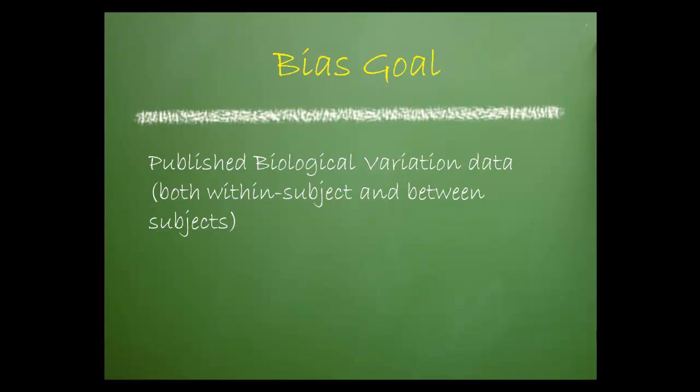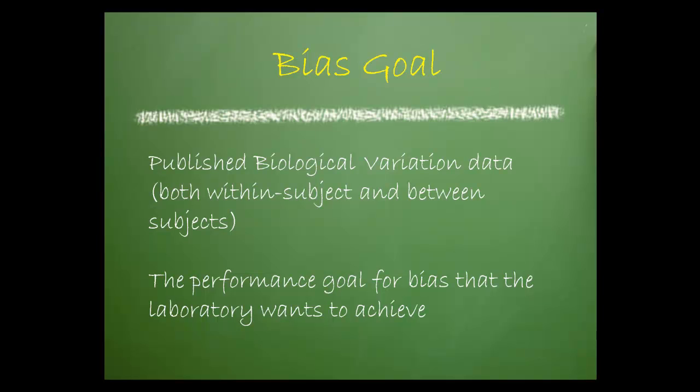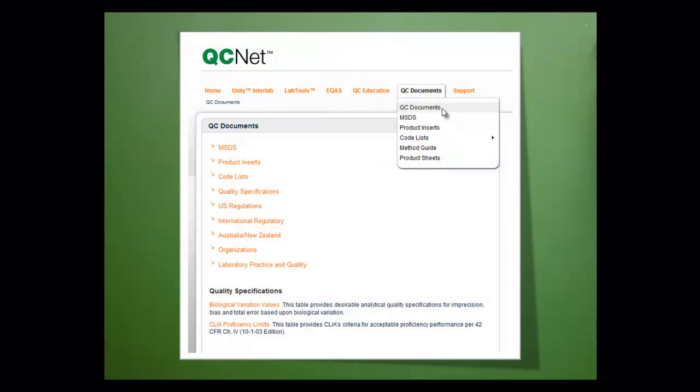The last component that we need for our equation is our bias goal percent. To calculate the bias goal percent, there are two pieces of information that are needed: published biological variation data, both within subject and between subjects, and the performance goals for bias that the laboratory wants to achieve. We already know where we can go to retrieve biological variation data, so we'll move on to choosing a performance goal for bias.